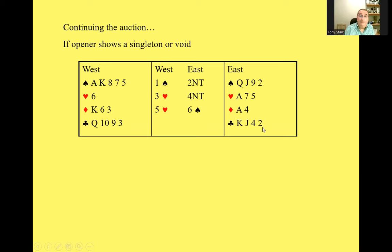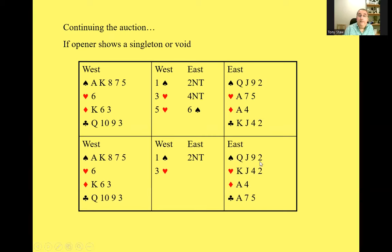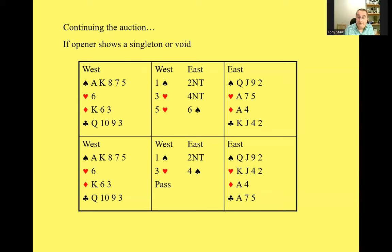If you change the east hand so the clubs and hearts are swapped, when your partner bids three hearts that is a bad fit because the king-jack in hearts represents wasted values. So if your partner shows a singleton or void in hearts, maybe you would just settle for four spades. Even though you've got exactly the same number of points, you probably don't want to be in a slam — six spades would probably not do very well as you've got a heart to lose and probably at least one club to lose. That's how you bid — it's very similar to how you bid in response to splinter bids.